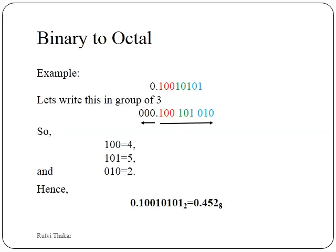Converting binary to octal: the binary digits are grouped in sets of 3. In the integer part we take groups starting from the LSB; here we take the grouping just after the decimal point moving towards the right-hand side. So 0.10010101 is grouped as: 100 (first group), 101 (second group), and 010 with an embedded zero (third group). 100 is equivalent to 4, 101 is equivalent to 5, and 010 is equivalent to 2. So 0.10010101 binary is equivalent to 0.452 in octal.